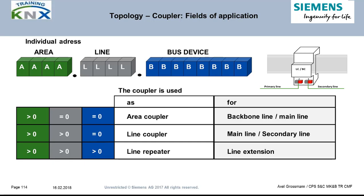A small quiz: What is the address of the line coupler of line 6 in area 4? Answer: 4.6.0. What is the address of the area coupler of area 13? Answer: 13.0.0. Could the individual address 2.3.127 also be a coupler? Answer: Yes — it could be a line repeater in line 2.3. Describe the function of a device with address 14.2.0: it is the line coupler 2 in area 14. Device address 9.0.0: it is the area coupler 9.